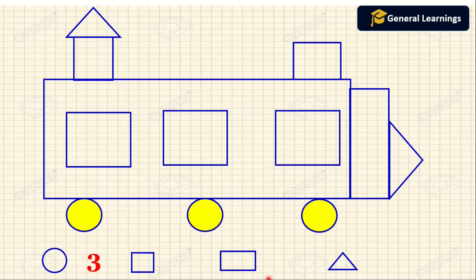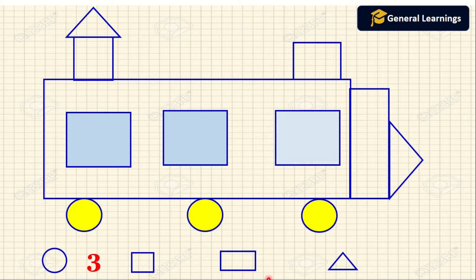Now we are going to count the number of squares: one, two, three, four. So the number of squares present in this picture is four.